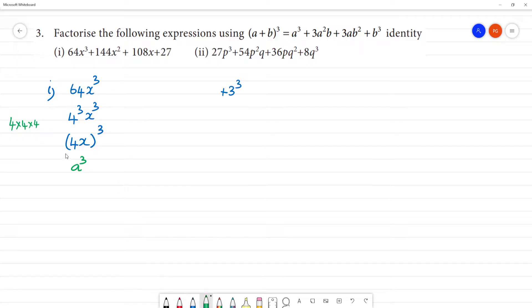What about the middle terms? We have 3 times a², which is (4x)², and a²b, which is 3 times 4x times 3². Plus at the last a³, which is 3³.